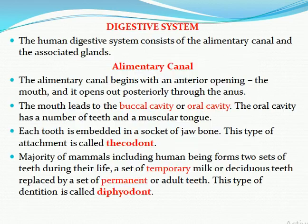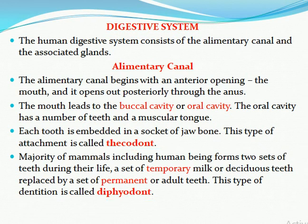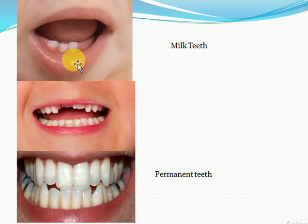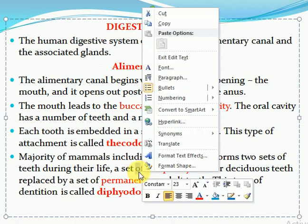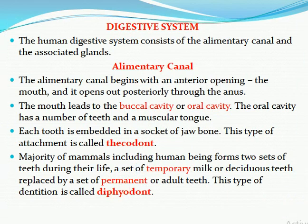Our teeth are also diphyodont. Diphyodont means that during our lifetime, first milk teeth appear — these are the milk teeth visible in a baby's mouth — and when they fall out, permanent teeth replace them. The majority of mammals including human beings form two sets of teeth during their lifetime: a set of temporary milk or deciduous teeth, which are then replaced by permanent or adult teeth. This type of dentition is called diphyodont dentition.